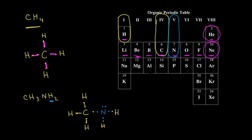I can also check the octet rule. Carbon has an octet, and nitrogen has an octet as well. Counting the electrons around nitrogen: two, four, six, and eight. Nitrogen is in the second period, so nitrogen is also going to follow the octet rule when you're drawing your dot structures.